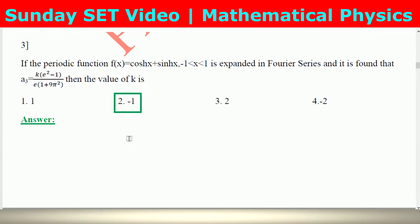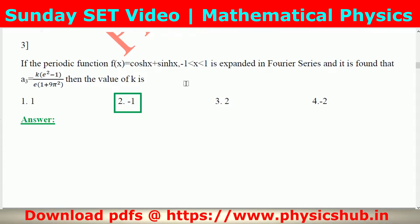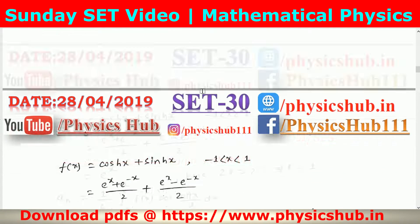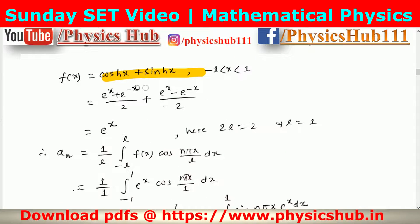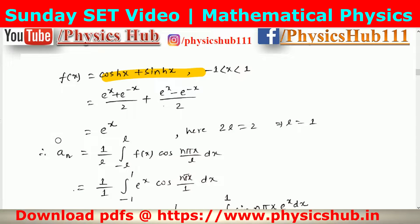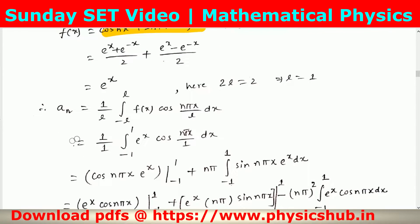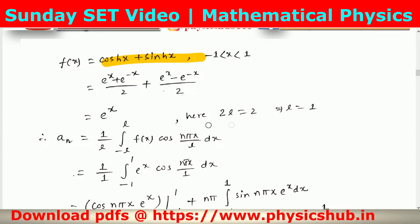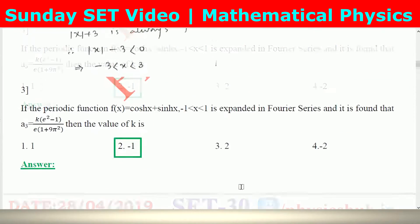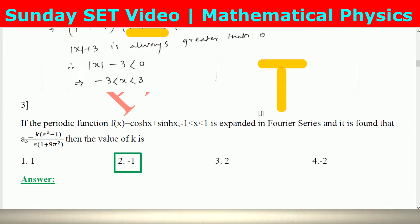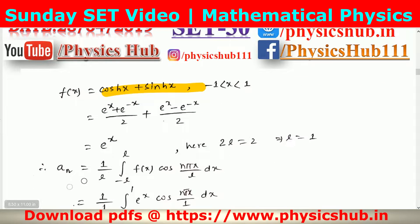Question number 3: the periodic function f(x) = cosh(x) + sinh(x), where −1 < x < 1, is expanded in a Fourier series and it is found that a₃ = k·(e²−1)/(e·(1+9π²)). Find the value of k. Writing cosh(x) + sinh(x) in terms of exponentials gives f(x) = eˣ. The range is −1 to +1, so 2l = 2, meaning l = 1. The Fourier coefficient is aₙ = (1/l)∫₋ₗˡ f(x)·cos(nπx/l) dx.